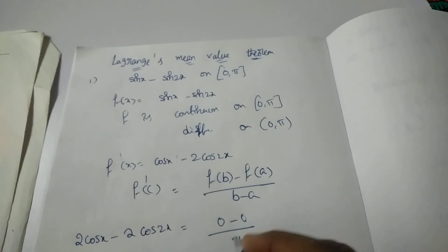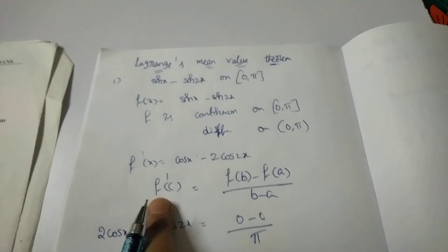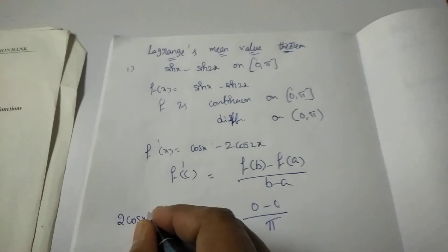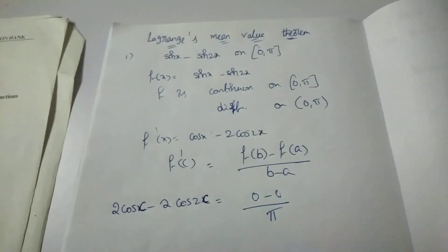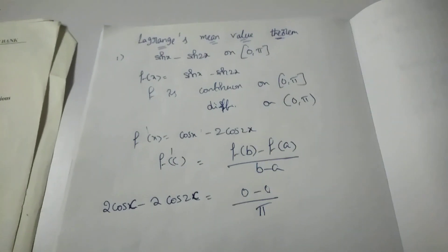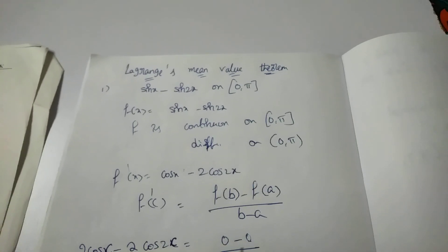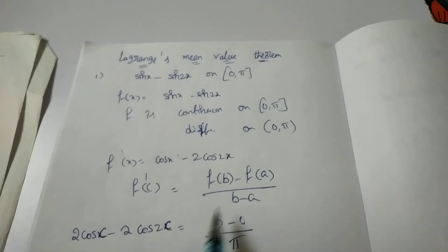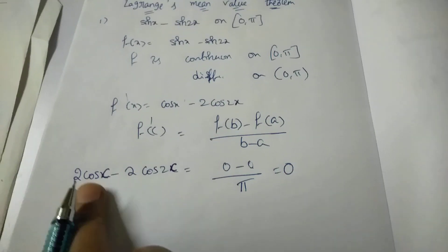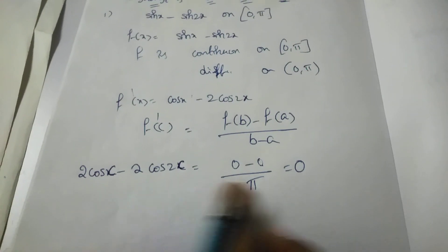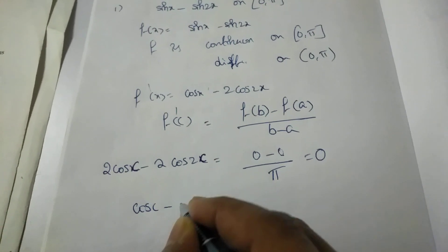Taking cross multiplication and writing in terms of c: cos c − 2 cos 2c = 0. So we need to find c from this equation. Simplifying: cos c − 2 cos 2c = 0.